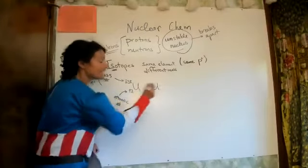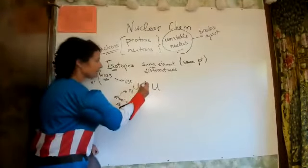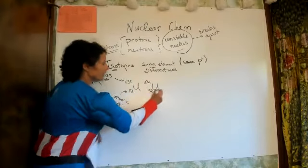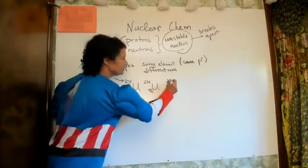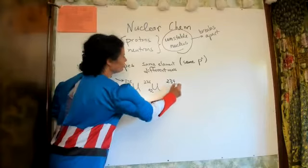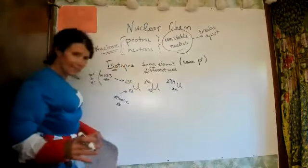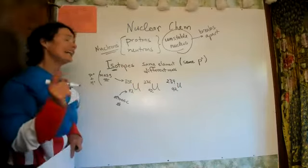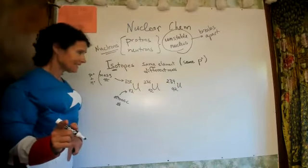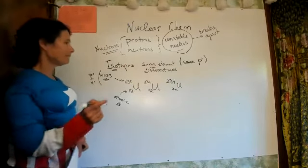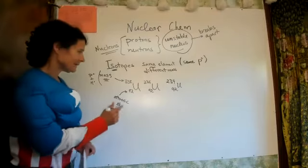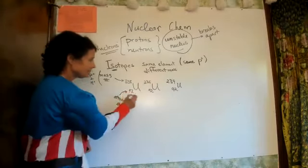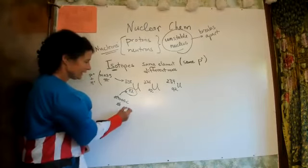There are several different isotopes of uranium: uranium-235, uranium-234, and a whole bunch more. Every element has multiple isotopes; at least one of those isotopes is unstable. Uranium — all of them are unstable. But what makes them all uranium is they all have 92 protons.